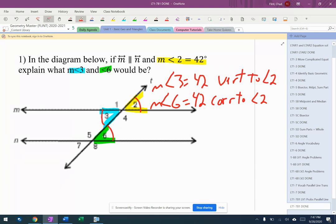2 and 3 are vertical. We've been talking about that for a handful of class days. And then if you're thinking, oh wait, Mr. Flint, but 3 and 6 are alternate interior, you are also correct.